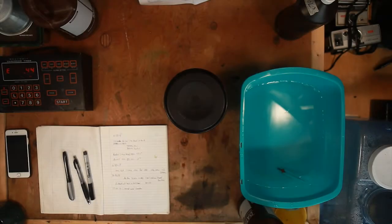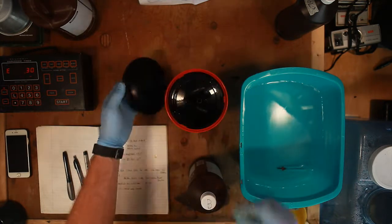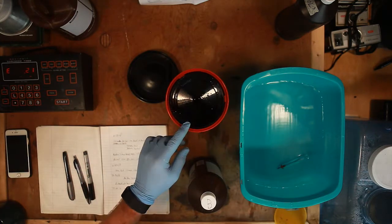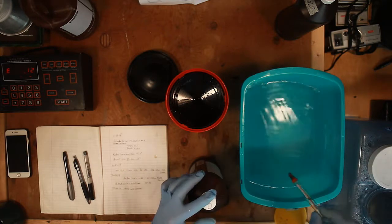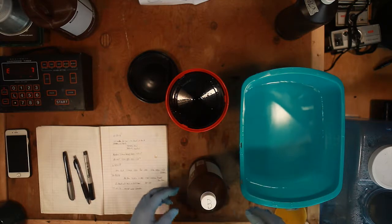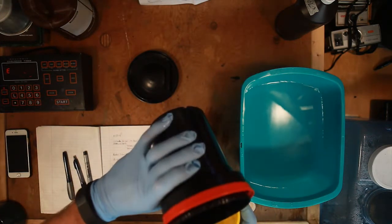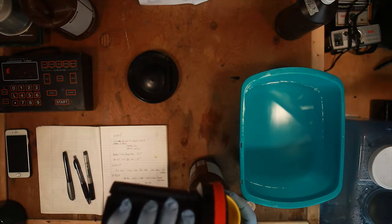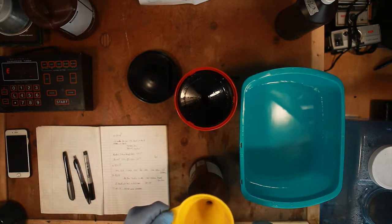Once again we're winding down this time on our blix. Same as our developer, we're going to give it one last agitation and then pour it back into our container. Now the nice thing here is after we pour this back in, we'll actually be light safe. For our stop bath we're going to take the water that we were using to keep our chemicals at temperature and use that as our stop bath.